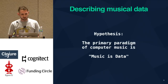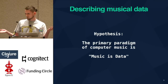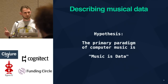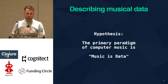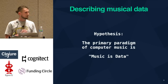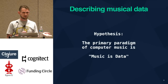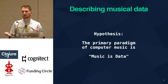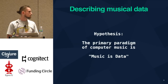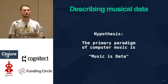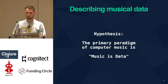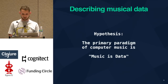You might be wondering how does Clojure spec apply to generating music. So let me state a hypothesis: if the primary paradigm of computing music is that music is data, then we should be able to use whatever tools are at our disposal to describe data, generate data, and manipulate data to produce music. We're going to see if this actually turns out to be true.